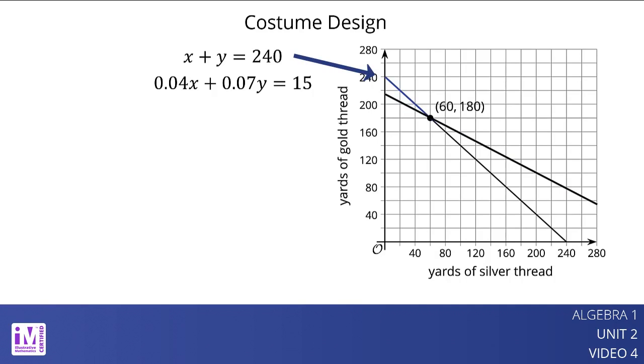Every point on the graph of x plus y equals 240 is a pair of values that meets the length constraint. Every point on the graph of 0.04x plus 0.07y equals 15 is a pair of values that meets the cost constraint. The point where the two graphs intersect gives the pair of values that meets both constraints. That point is 60, 180, which represents 60 yards of silver thread and 180 yards of gold thread.